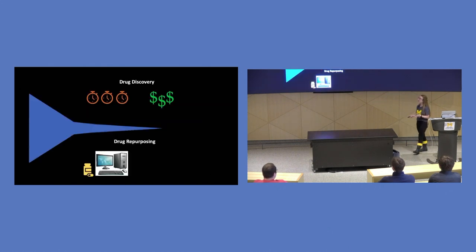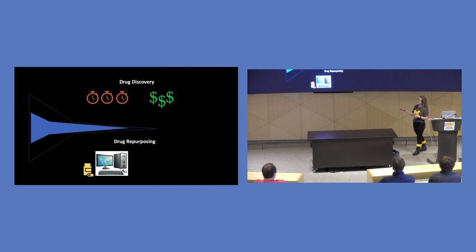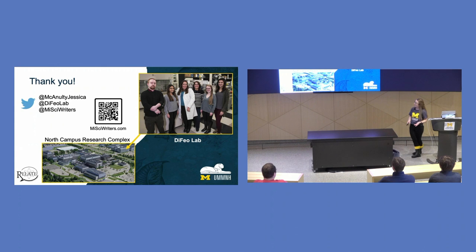So overall with this talk, I hope you got an idea of the different steps in drug discovery, the time and cost it takes that's associated with it. However, with the use of drug repurposing and using computational models to identify other potential FDA-approved drugs that could be used for a different disease, we're drastically decreasing the time and cost associated with drug discovery. And this is something being implemented here at U of M.